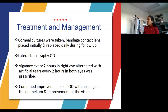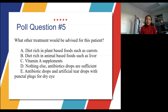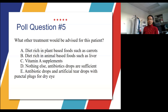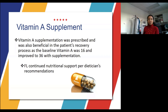The poll question asked: what other treatment would you advise for this patient? The majority of you said vitamin A supplements, which is exactly what was recommended as the next step. This was beneficial in the patient's recovery. Upon giving him vitamin A supplements, his baseline vitamin A level of 16 improved to 36. He continued this nutritional support per his dietitian's recommendations.